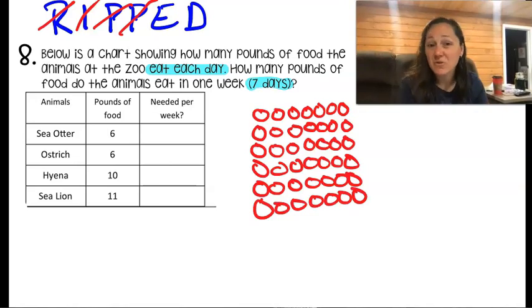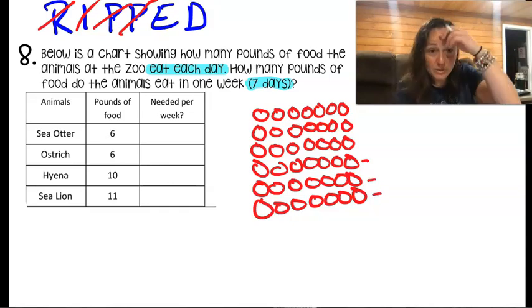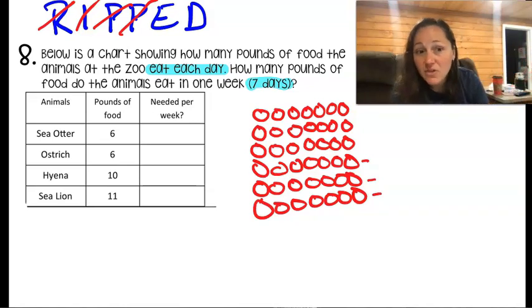Now I would count all of these. So I would sit and count and I'd go one, two, three, four, five, six, seven, eight, nine, ten, eleven, twelve, thirteen, fourteen... [counting continues to 42]. So I counted all of those little circles. So six times seven is 42.